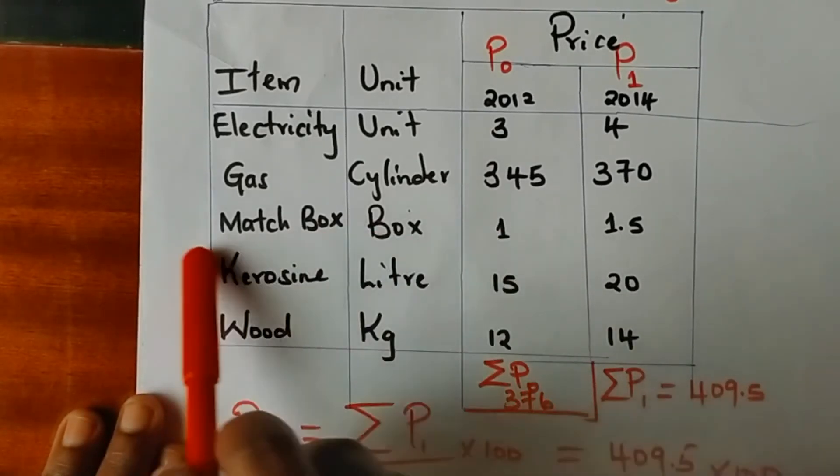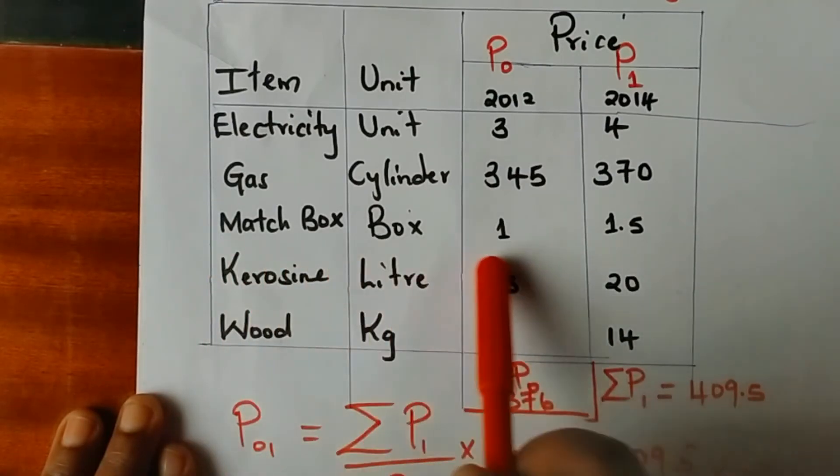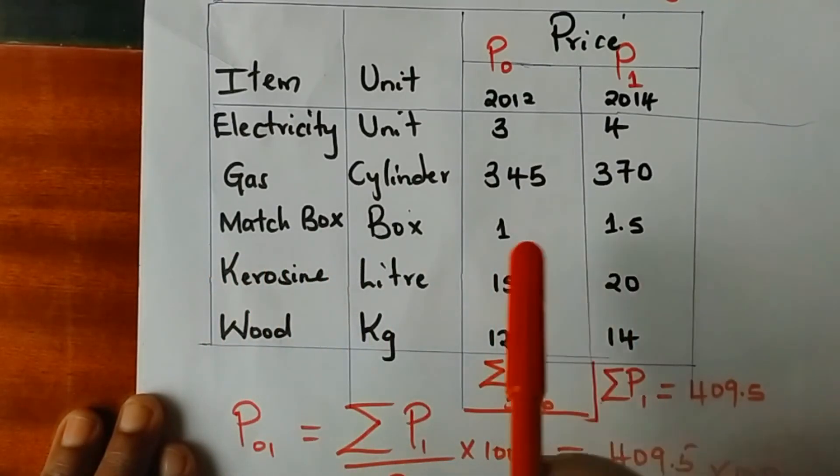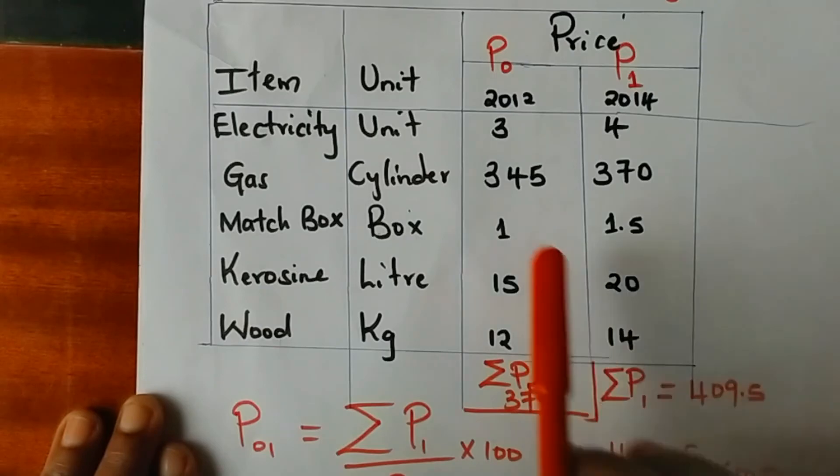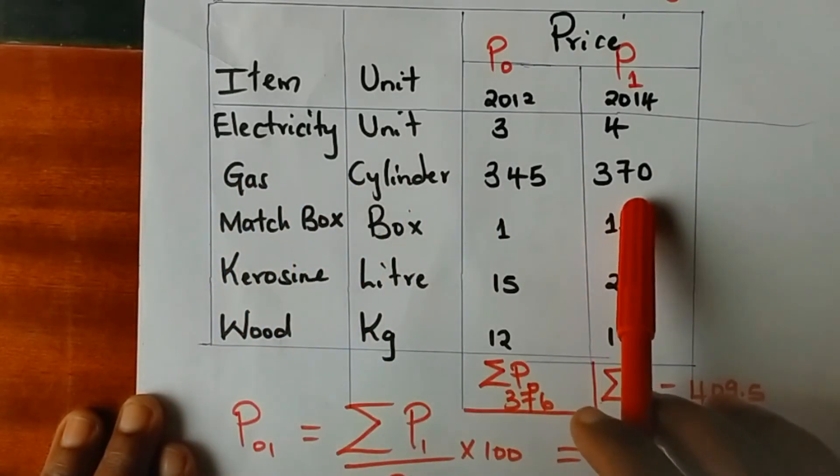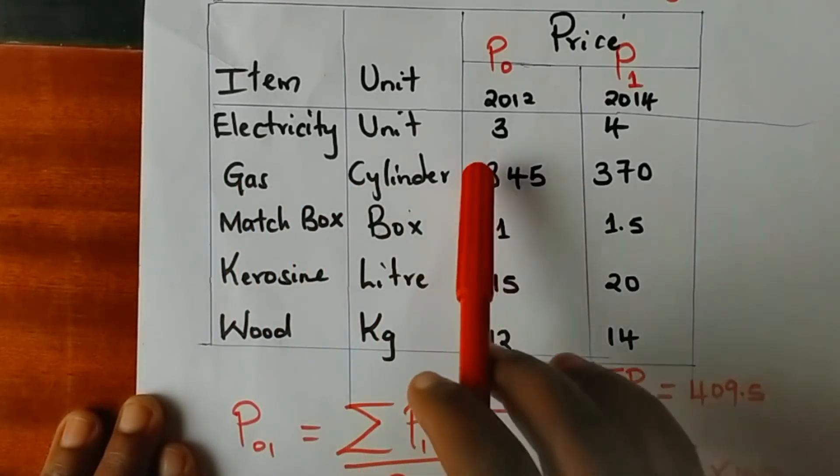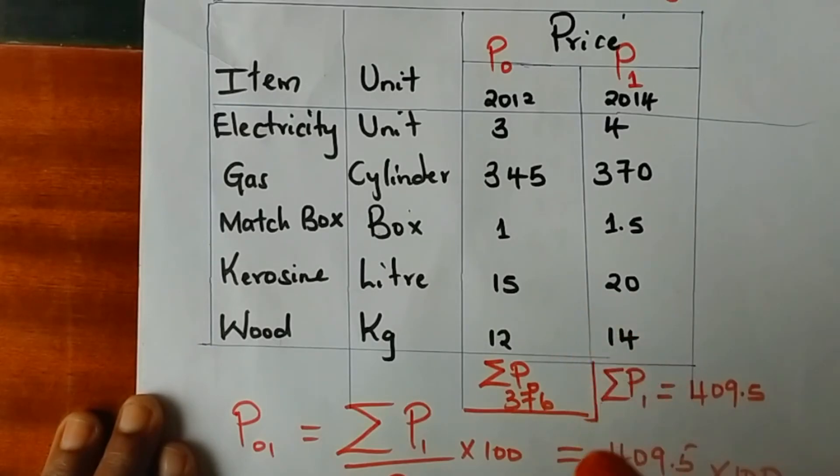As you can see here, the prices of match boxes is very low as compared to the price of gas. This extreme observation will have an undue influence on the index, so for that reason this method is not the best method.